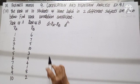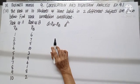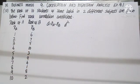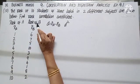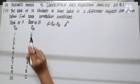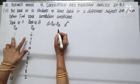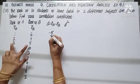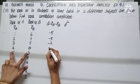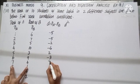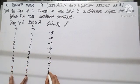Question number 10: The ranks of 10 students of the same batch in two different subjects are given. Find the rank correlation coefficient. As we are already given ranks, let us call them RA and RB. Finding the difference in ranks, RA minus RB: 1 minus 6, 2 minus 7, 3 minus 5, 4 minus 10, 5 minus 3, 6 minus 9, 7 minus 4, 8 minus 1, 9 minus 8, 10 minus 2.